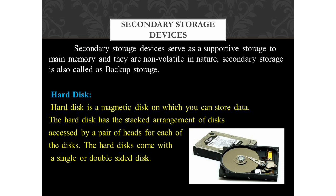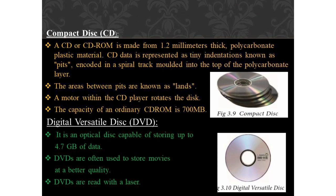A hard disk is a magnetic disk on which you can store data. It has a stacked arrangement of disks accessed by a pair of heads for each disk, and comes with single or double-sided disks. A CD or CD-ROM is made from 1.2 mm thick polycarbonate plastic with a thin layer of aluminum or gold on the surface. CD data is represented as tiny indentations called pits, enclosed in a spiral track. The areas between the pits are called lands. The capacity of an ordinary CD-ROM is 700 MB.